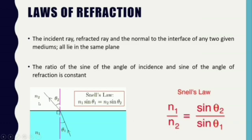In Snell's law, n1 is the refractive index of the denser medium and n2 is the refractive index of the rarer medium; theta1 is the angle of incidence and theta2 is the angle of refraction. Since light in a denser medium makes a smaller angle with the normal than in a rarer medium, theta1 is less than theta2, confirming which medium is denser and which is rarer.